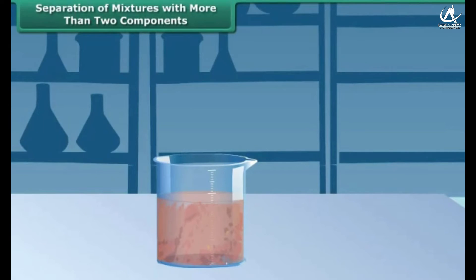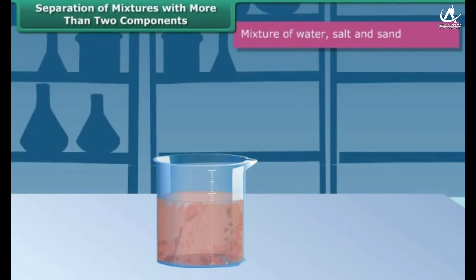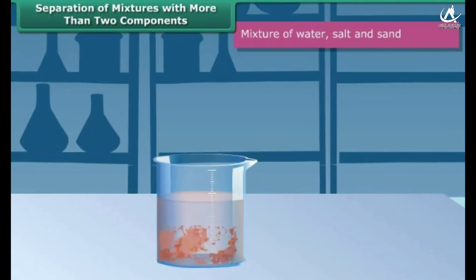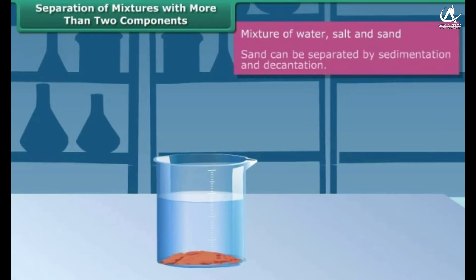Let us do a workout. If you are given a mixture containing water, sand and salt, how will you separate the three components from one another? You will leave the mixture undisturbed for a while to separate sand. Sand, which is heavy and insoluble in water, settles down at the bottom of the container. The mixture is then separated by decantation to get sand.